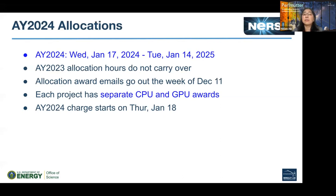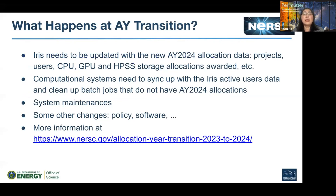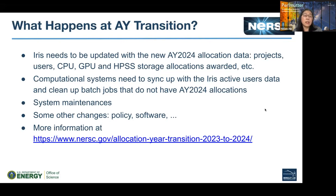Each project will have separate CPU and GPU awards that you cannot interchange — jobs on CPU and GPU are charged separately. We will start charging on the second day of the allocation year, which is Thursday January 18th. At AY transition, our database needs to be updated with the new allocation data: new projects, users, storage, CPU/GPU allocations awarded, and then the computational systems need to sync up with the IRIS active users data.